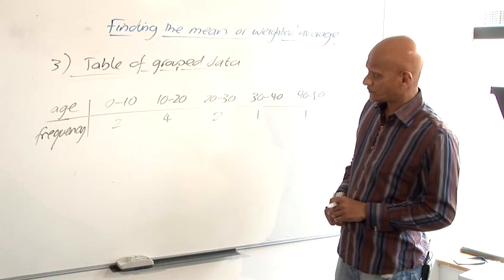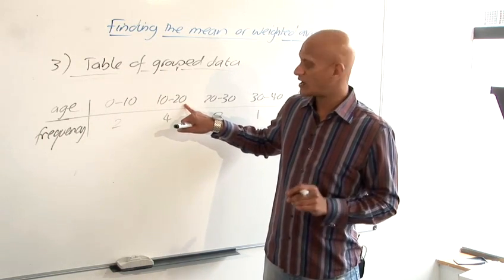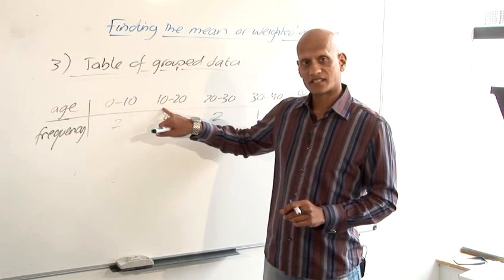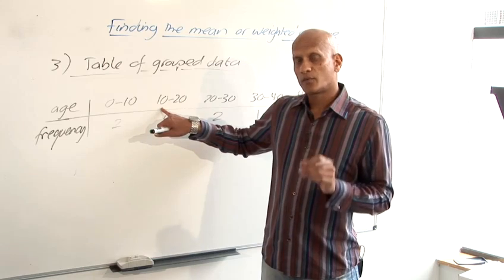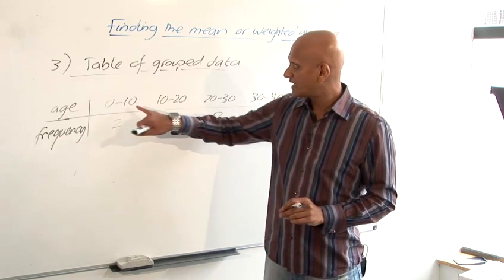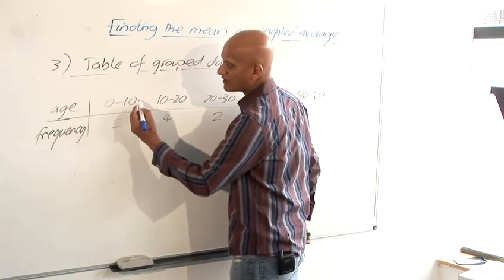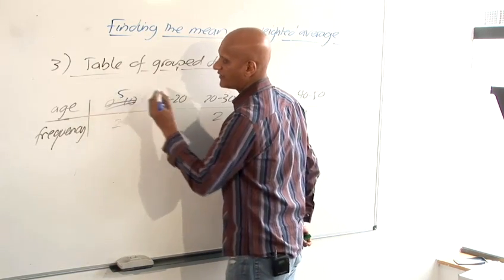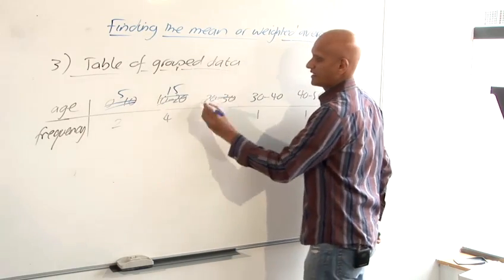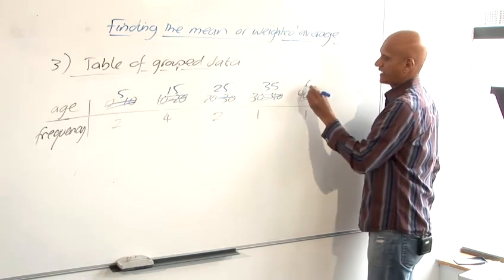First thing we need to do is to change these to the mid values. Now we can change these to the mid values straight away, because you can see there's no gap between the end of that class and the start of the next class. If there is a gap, then we must first of all rewrite it using class boundaries. But in this case, there isn't a gap, so it's fine. So we're going to find the middle of each class. So the middle of that class, 0 to 10, would be 5. And the middle of that class would be 15. The middle of that class would be 25, 35, and 45.